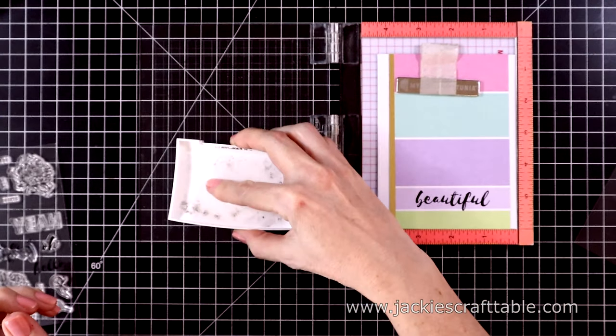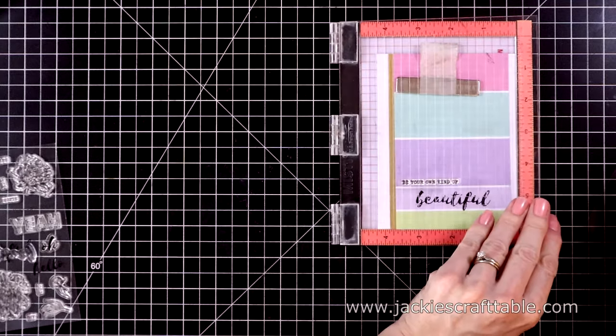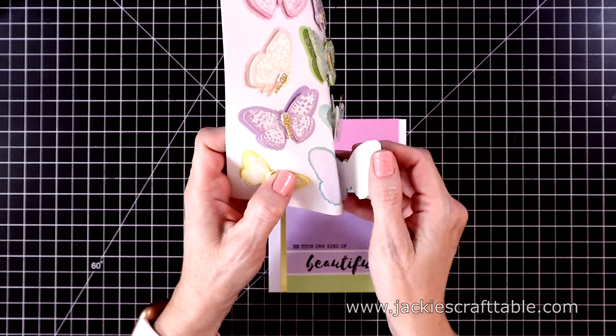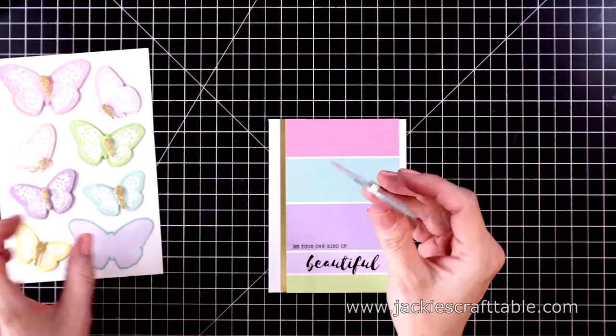Next, I'm going to stamp a sentiment above it. This one says, be your own kind of. And I thought this sentiment was really fun. This is a really easy card. I'm just going to pull out this teal butterfly. And this has three layers to it.